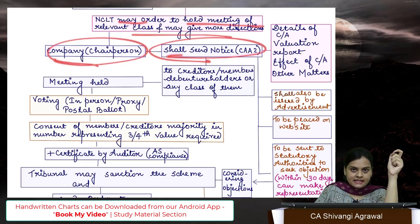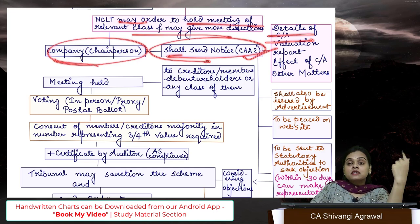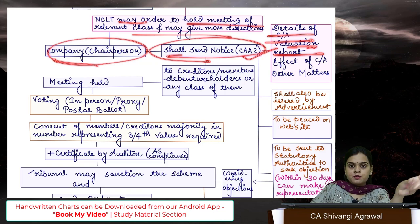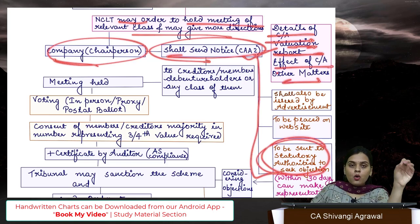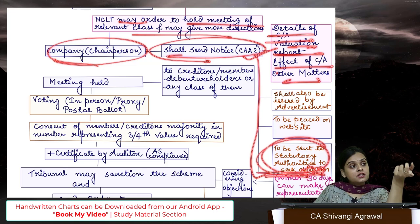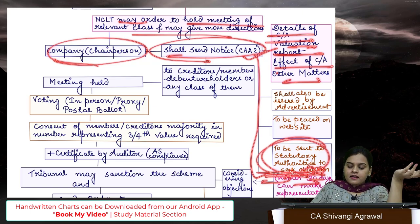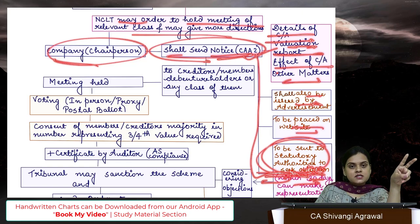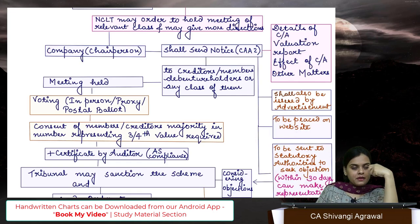NCLT orders to hold a meeting. A chairperson calls the meeting by sending notice. The notice sent to members and creditors is accompanied by details of the compromise or arrangement, valuation report, effect and other matters. At the same time, one notice is also sent to statutory authorities — which could be income tax, central government, SEBI, registrar, stock exchange, Competition Commission of India, etc. — to seek objections. They can give objections within 30 days.